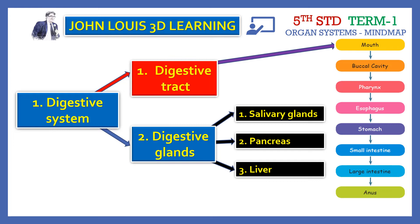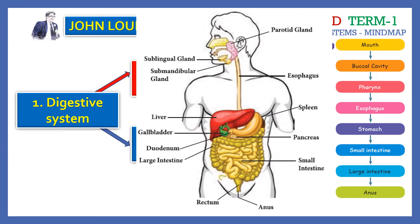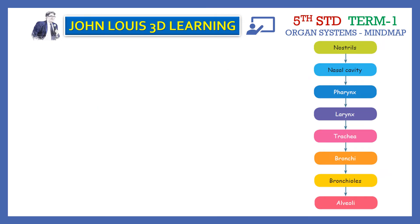So if we know the digestive system, it has 2 parts: the digestive tract and the digestive glands. The 3 digestive glands are salivary glands, pancreas, and liver. We will see these in detail. Now we will move to the respiratory system.